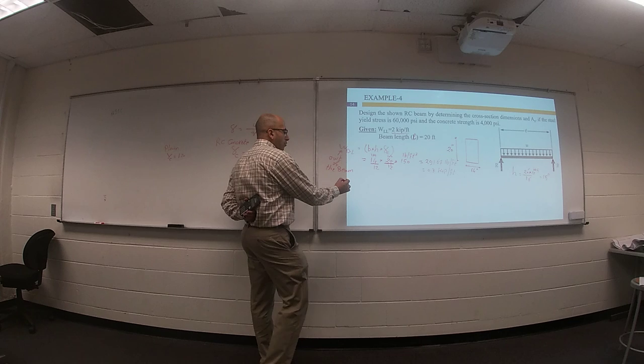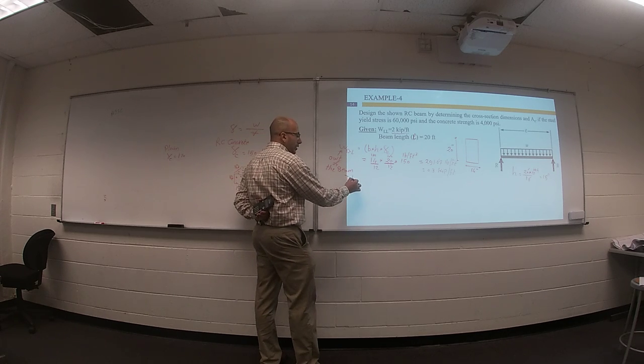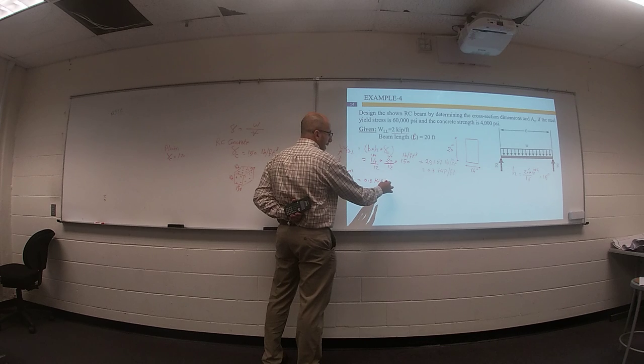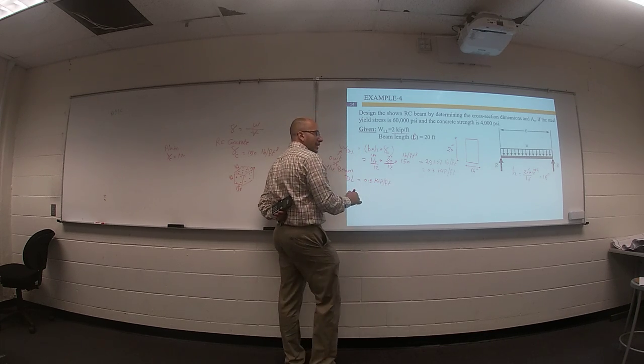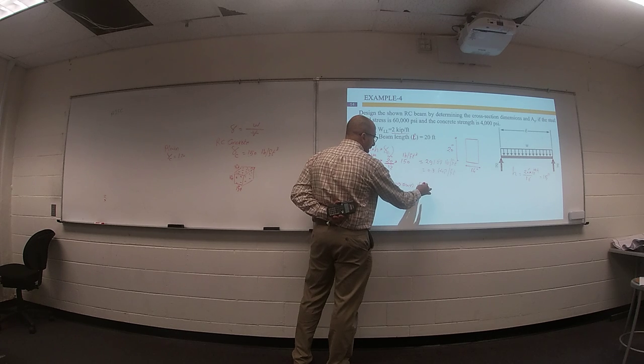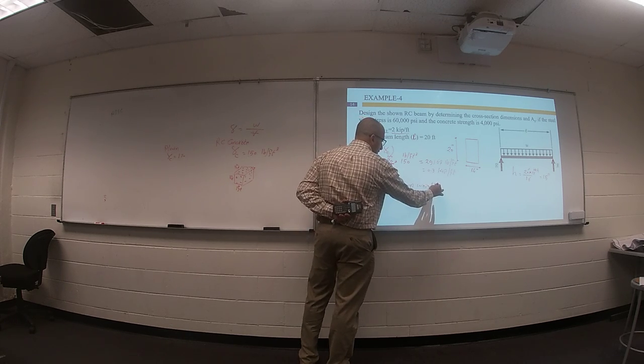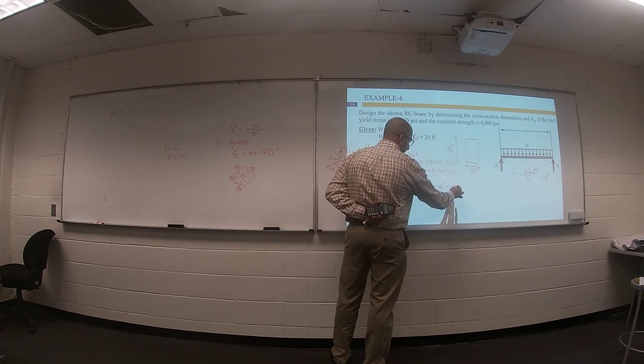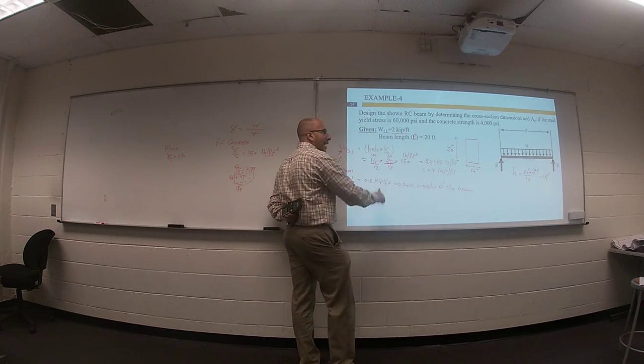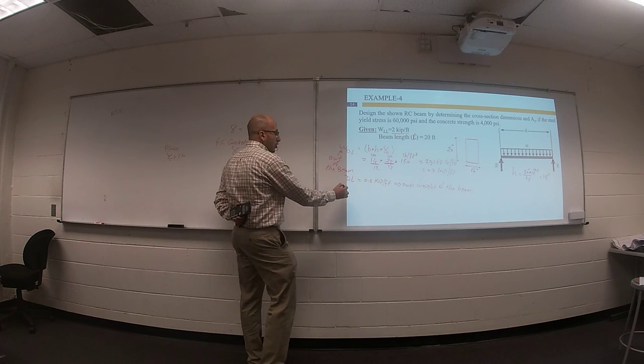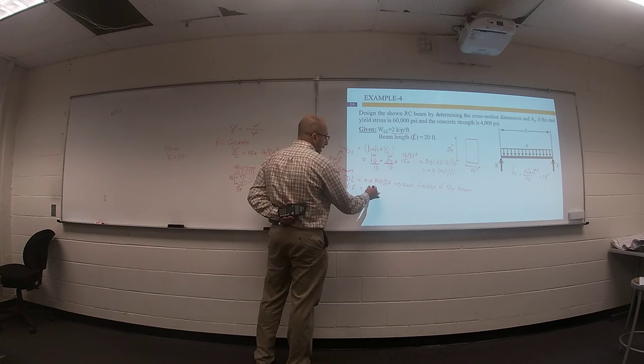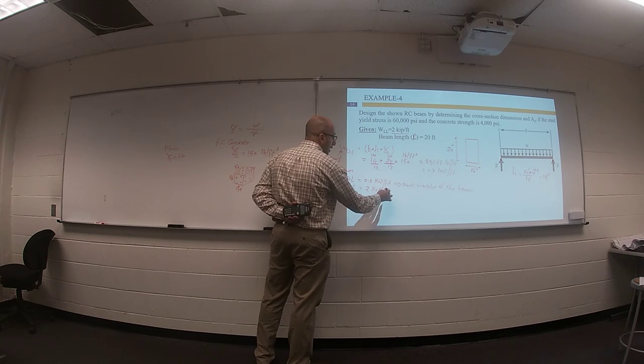So right now, your dead load equals 0.3 kips per foot. You need to put your dead load in this beam - the own weight of the beam. If you would like to get the own weight of your beam, it's cross-sectional area times gamma of concrete. Your live load equals 0.3 kips per foot.